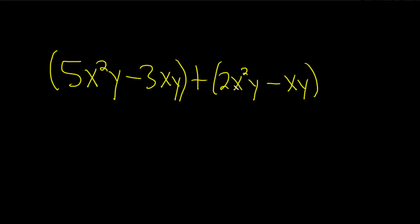In this problem, we have two polynomials in two variables—polynomials in x and y because we have more than one variable. We have to add them and then find the degree of the answer.